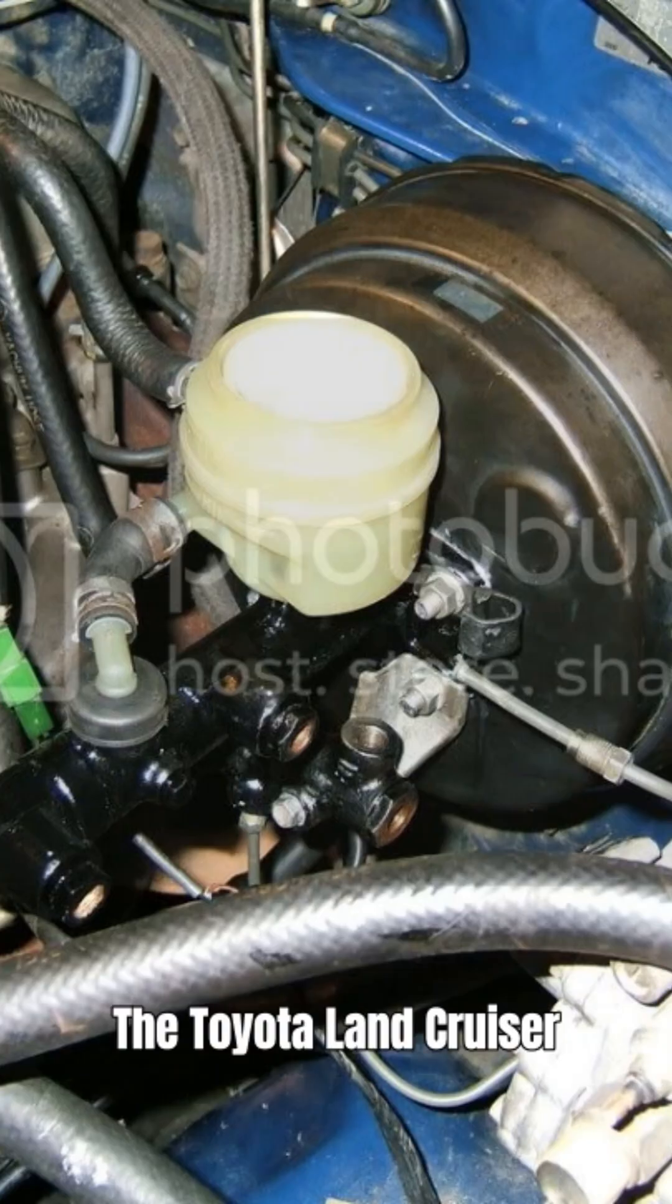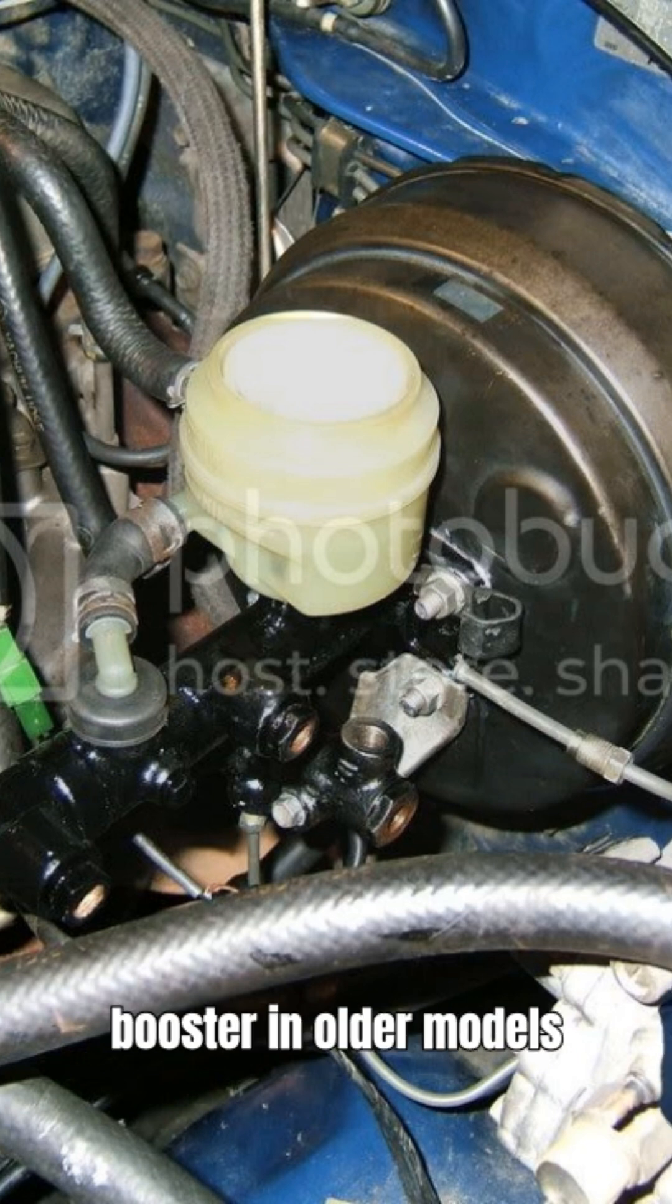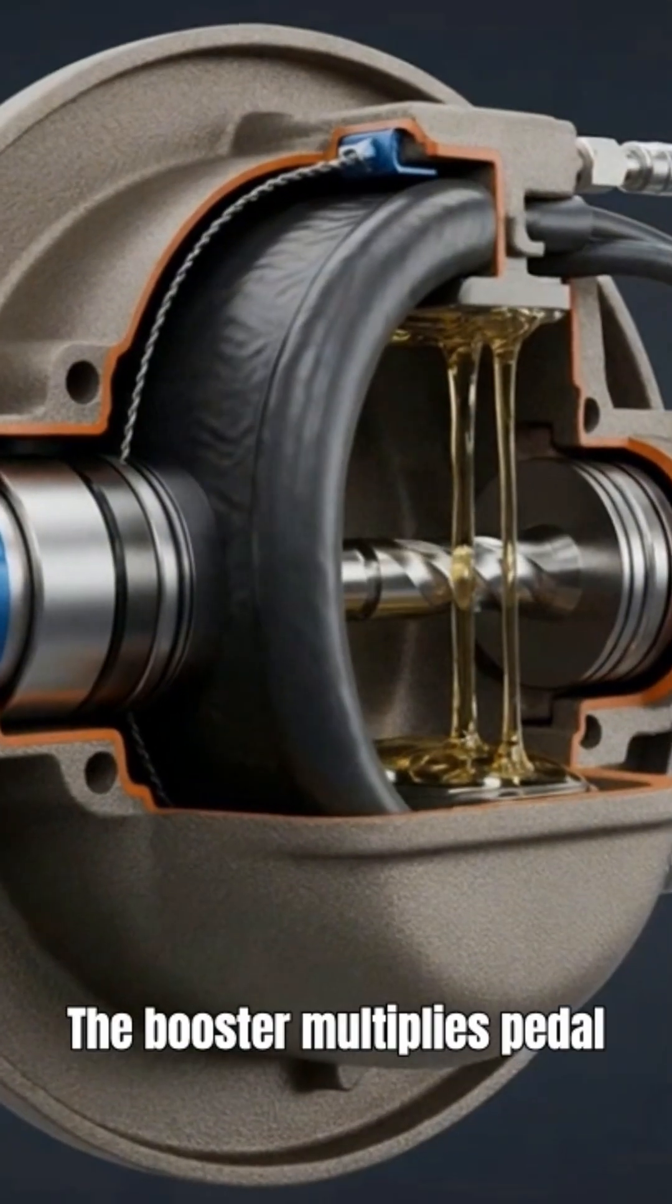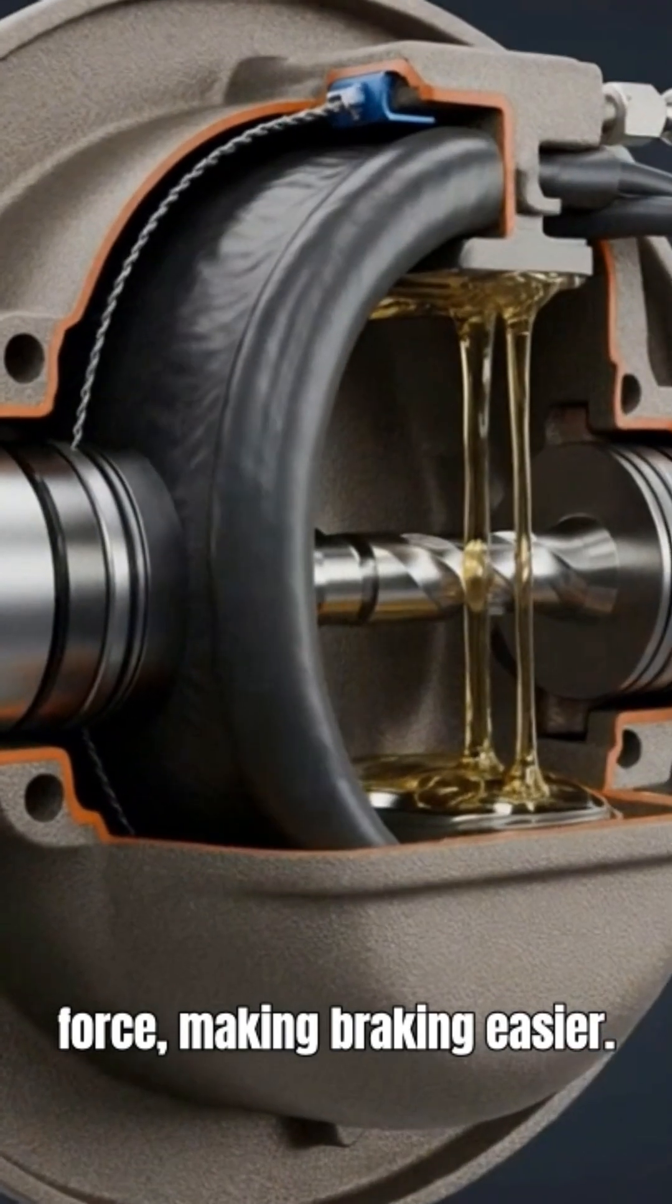The Toyota Land Cruiser uses a vacuum brake booster in older models or a hydraulic booster in many modern models, often powered by the steering pump. The booster multiplies pedal force, making braking easier.